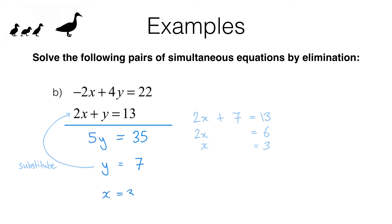So my solution set is X equals 3, Y equals 7. Now if you've got time, you can check your solution set by substituting these values in place of X and Y in the original equations. Negative 2 lots of 3 plus 4 lots of 7 should equal 22, and 2 lots of 3 plus 7 should equal 13. If any one of those doesn't work, that means the solution set is wrong and we made a mistake somewhere. Checking like that is a really good habit to get into, but it does take extra time.